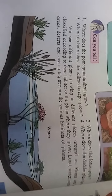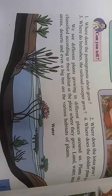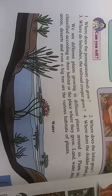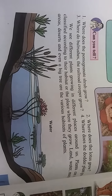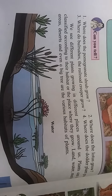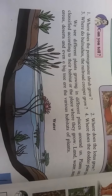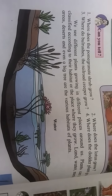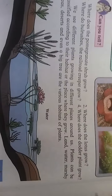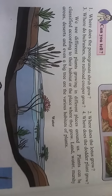Where does the pomegranate shrub grow? On land. Where does the lotus grow? In water. Where do blue shore and railroad creepers grow? We see that different plants grow in different places around us. Plants can be classified according to their habitat — the place where they grow.